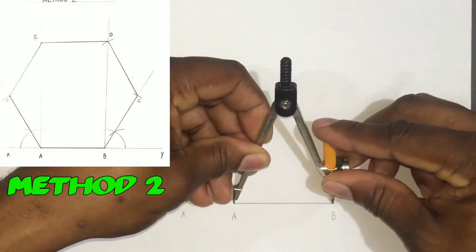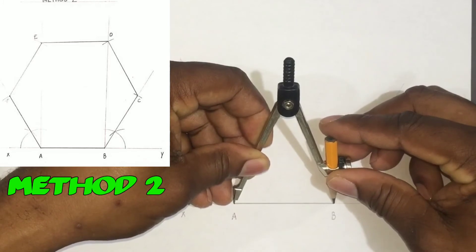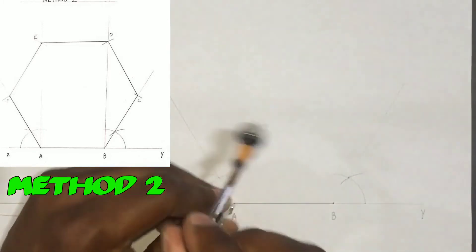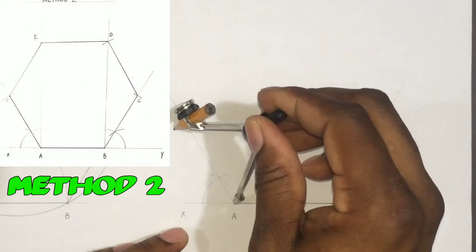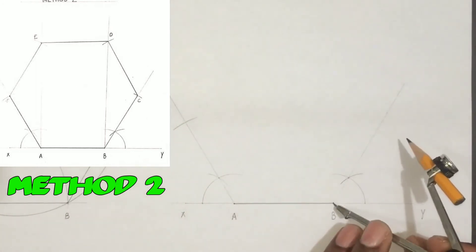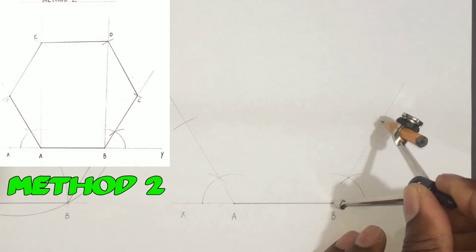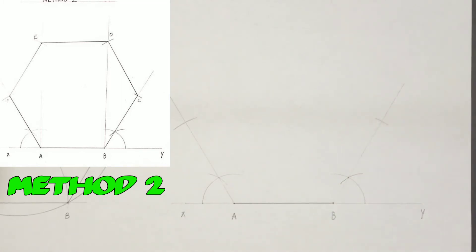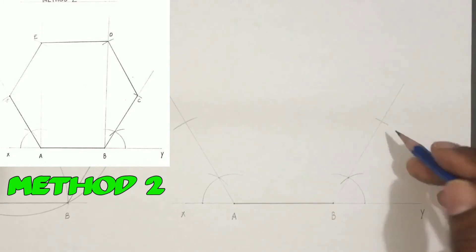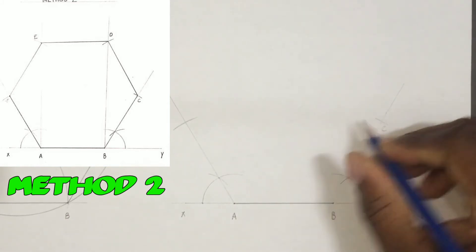Next, we will open our compass to A-B, which is 60 mm, and we will scribe an arc to cut the line from A. From B, we will also scribe an arc to cut the line. We will identify these points as C and F.